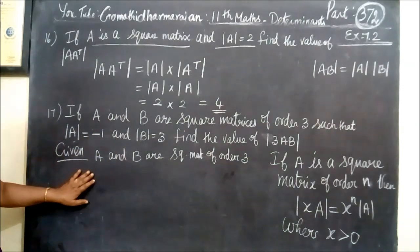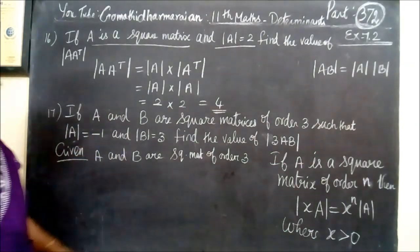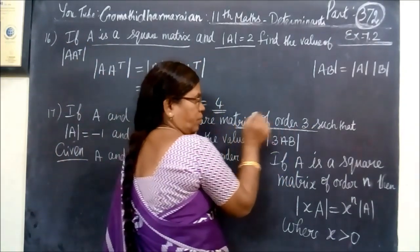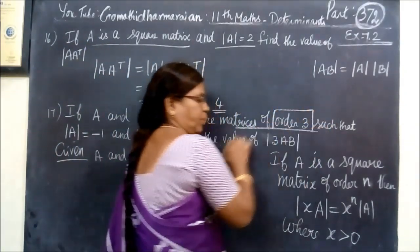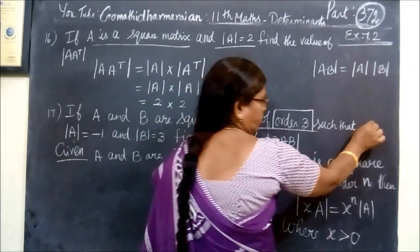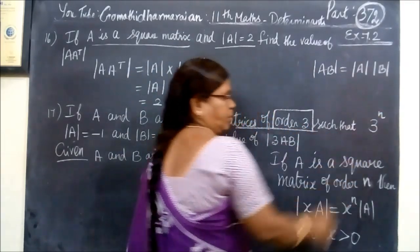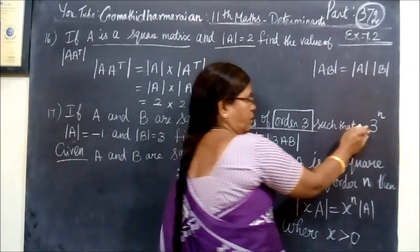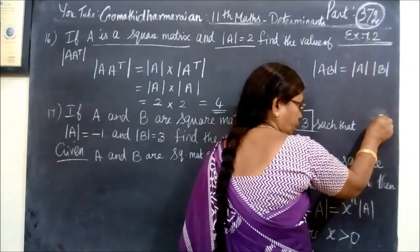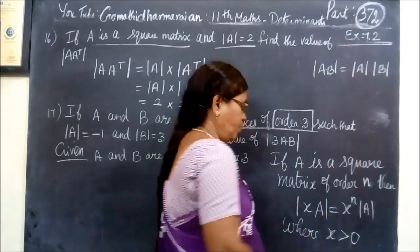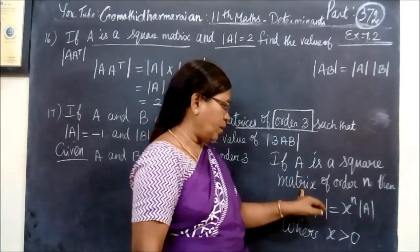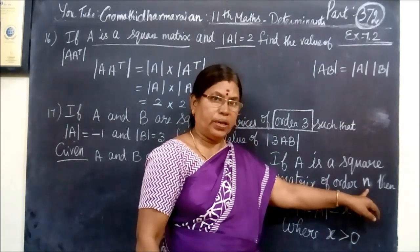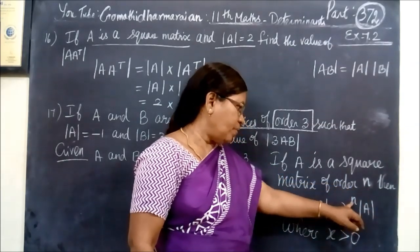The next question: A and B are square matrices of order 3. For a square matrix of order n, this is the formula — 3 to the power n. If A is a square matrix of order n, where all the numbers are equal.